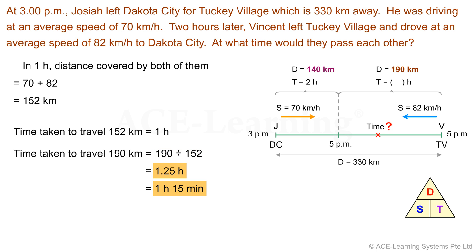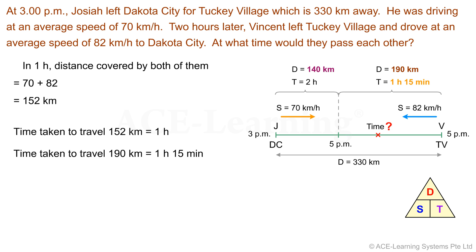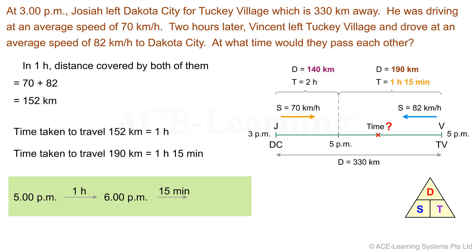1.25 hours is 1 hour 15 minutes. Hence, after 1 hour 15 minutes from 5 p.m., Josiah and Vincent passed each other. 1 hour from 5 p.m. is 6 p.m., and 15 minutes from 6 p.m. is 6:15 p.m. They would pass each other at 6:15 p.m.